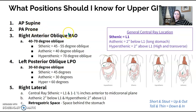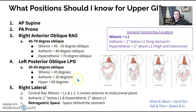Your common positions are either supine or prone. There are two oblique options: RAO, which is your anterior oblique at 40 to 70 degrees, and LPO at 30 to 60 degrees. The larger the patient, the larger the degree of oblique. There's also a right lateral.